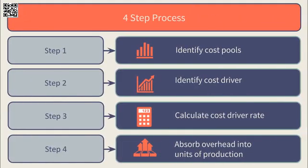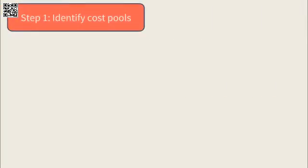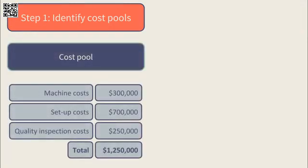Now let's calculate the cost per unit using activity-based costing using a four-step approach. Step 1 is to separate overheads into cost pools. This has been done in the question: the total company overhead of $1.25 million has been separated into three cost pools — machine costs of $300,000, setup costs of $700,000, and quality inspection costs of $250,000.